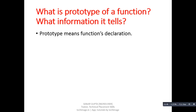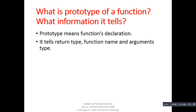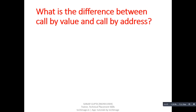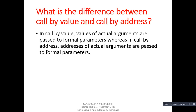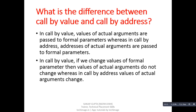Next question: what is the prototype of a function and what information does it tell? Answer: prototype means function declaration. It tells the return type, function name, and argument types. Next question: what is the difference between call by value and call by address? Answer: in call by value, values of actual arguments are passed to formal parameters, whereas in call by address, address of actual arguments are passed to formal parameters. In call by value, if we change values of formal parameters, then values of actual arguments do not change.